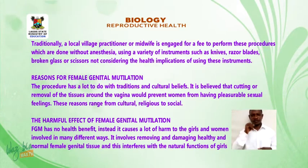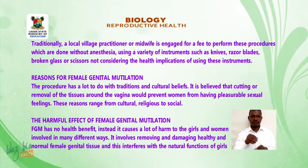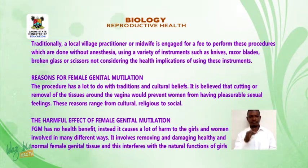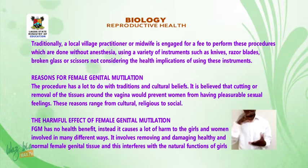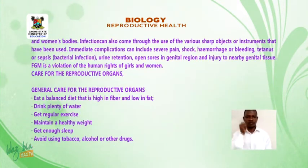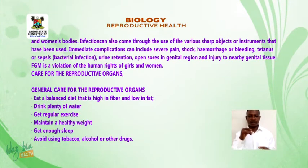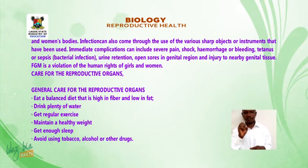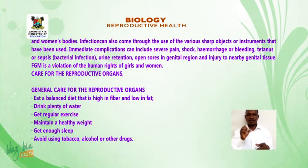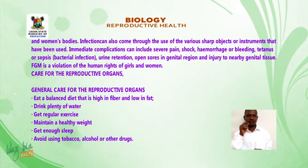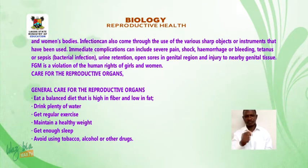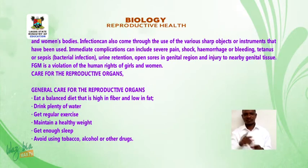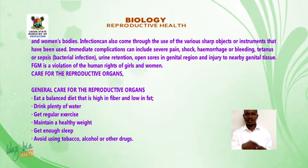The harmful effects of FGM: FGM involves removing and damaging healthy and normal female genital tissue, which interferes with the natural functions of girls' and women's bodies. Infection can come through the use of sharp objects or instruments. Immediate complications can include severe pain, shock, hemorrhage or bleeding, tetanus or sepsis, bacterial infection, urine retention, open sores in the genital region, and injury to nearby genital tissue. FGM is a violation of the human rights of girls and women.